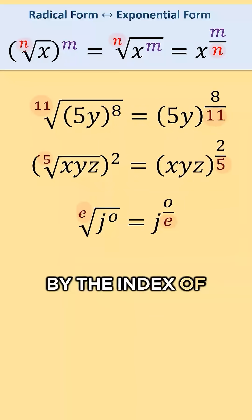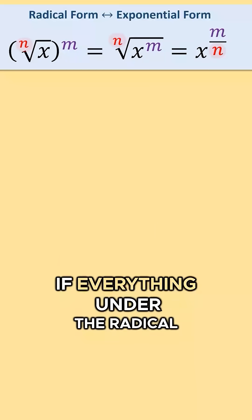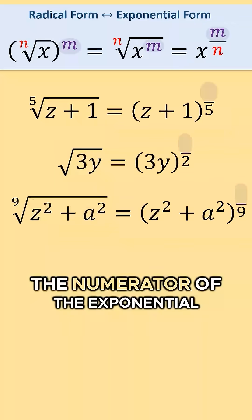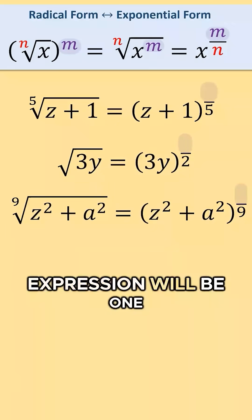divided by the index of the radical. If everything under the radical is not grouped together and raised to a power, the numerator of the exponential expression will be 1.